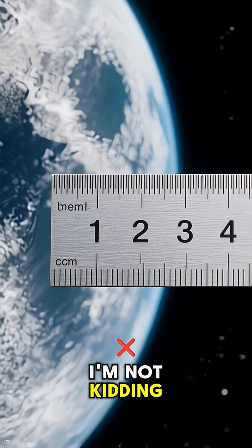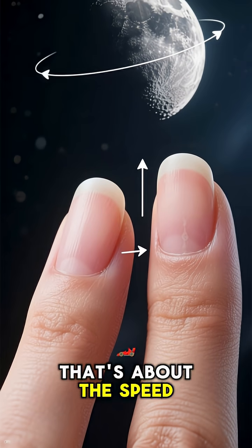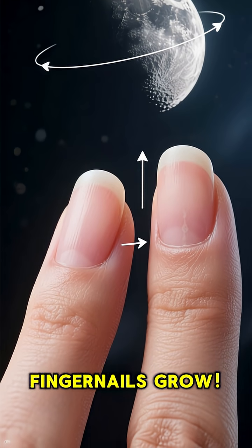I'm not kidding. Every single year, the Moon moves about 3.8 centimeters further from Earth. That's about the speed your fingernails grow.